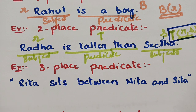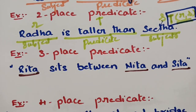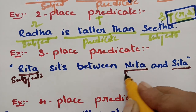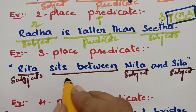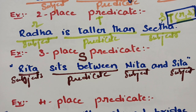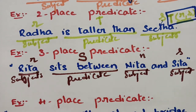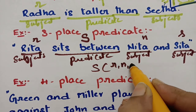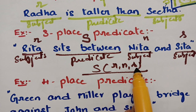For a three-place predicate: 'Rita sits between Nita and Sita.' There are three names — Rita, Nita, Sita — all subjects. 'Sits between' is the predicate (capital S). This is a three-place predicate, symbolized as S(r, n, s), read as 'Rita sits between Nita and Sita.'